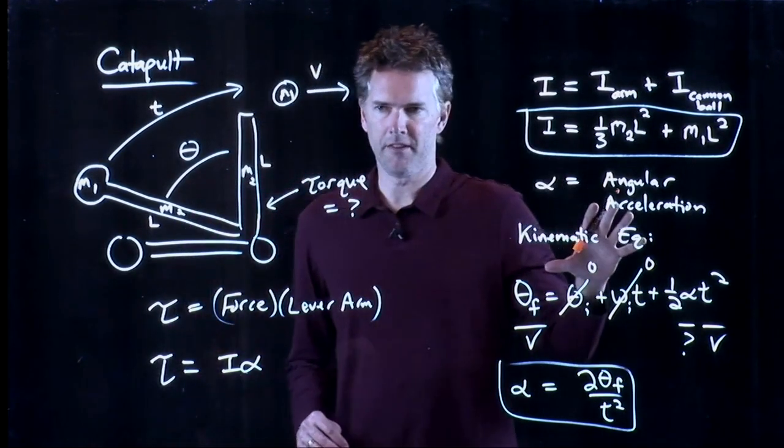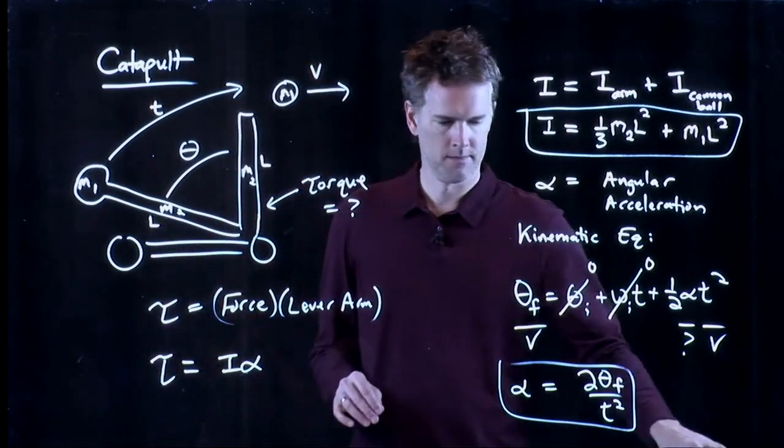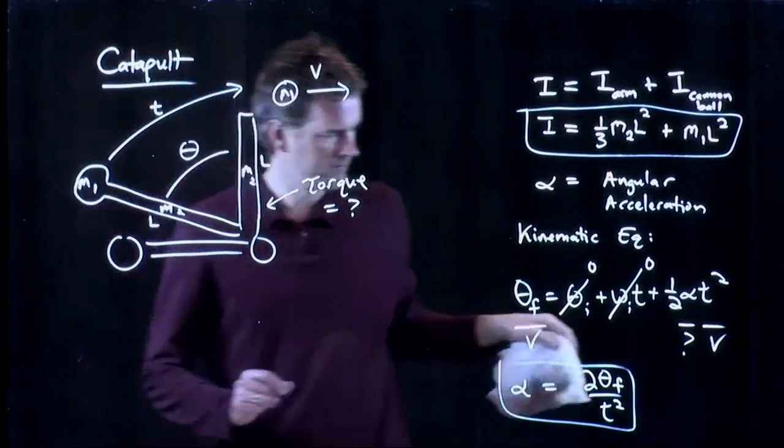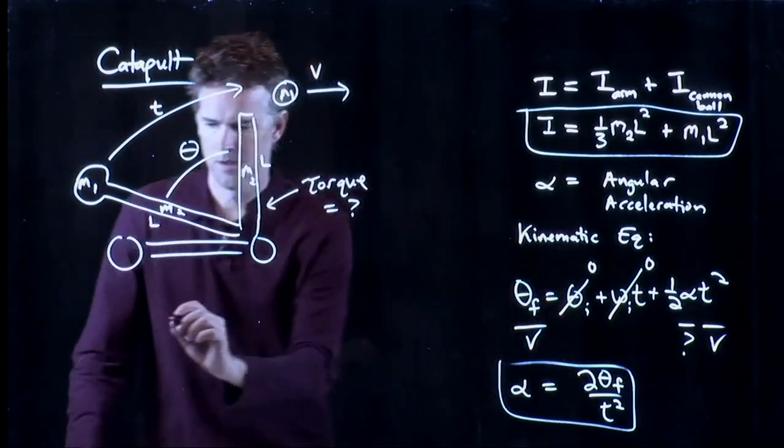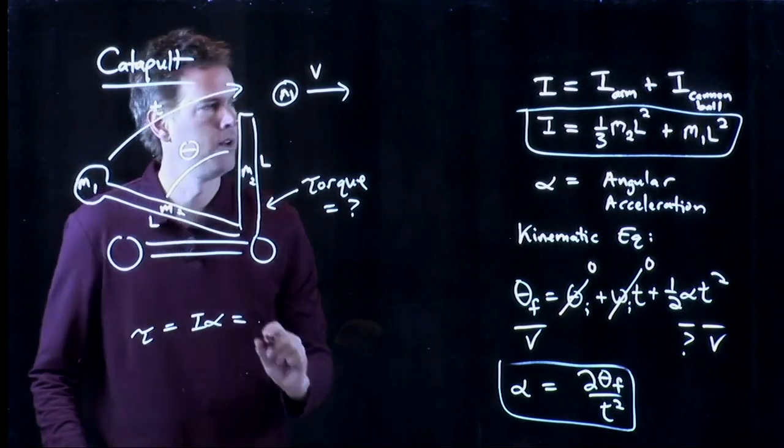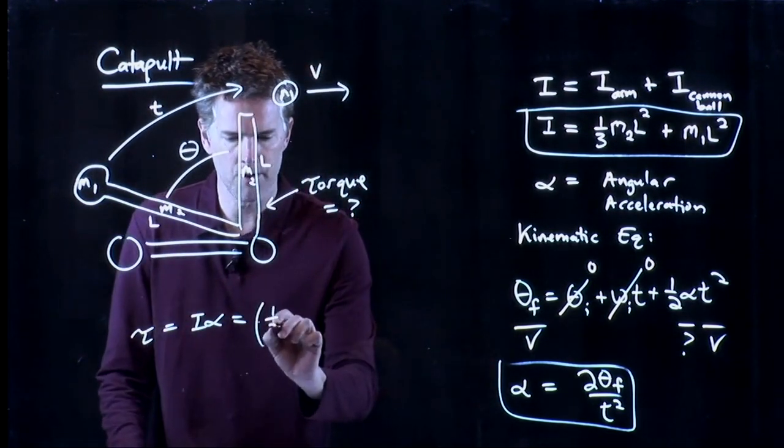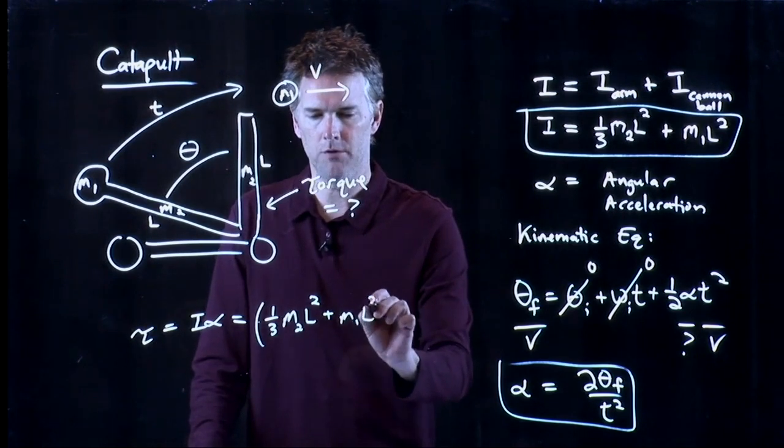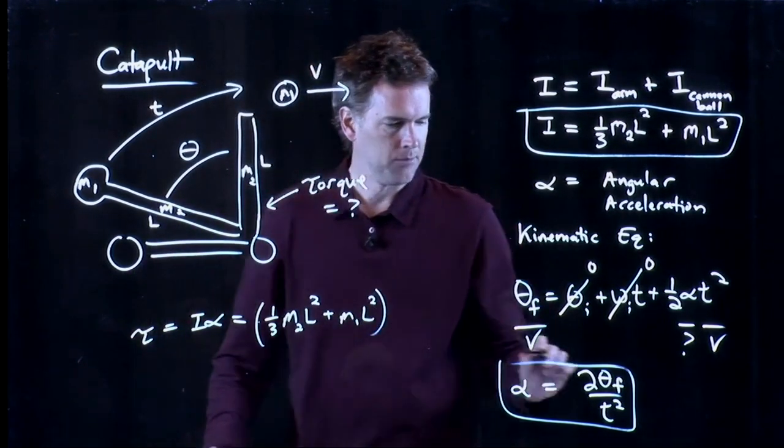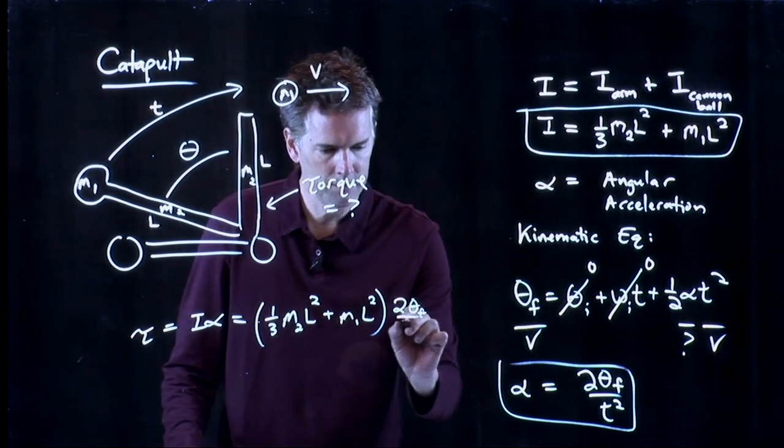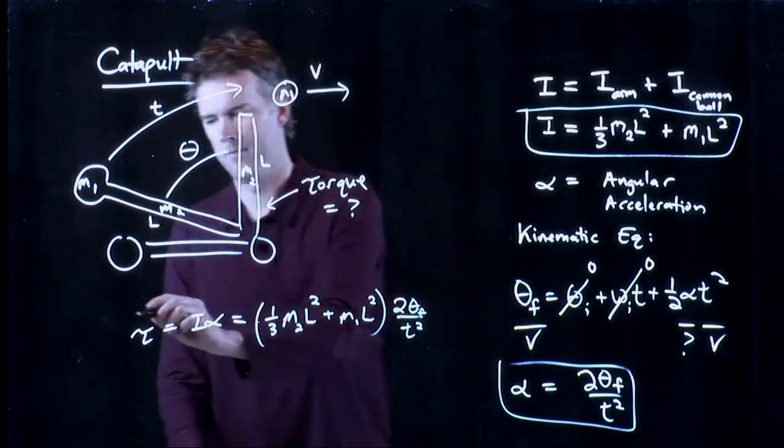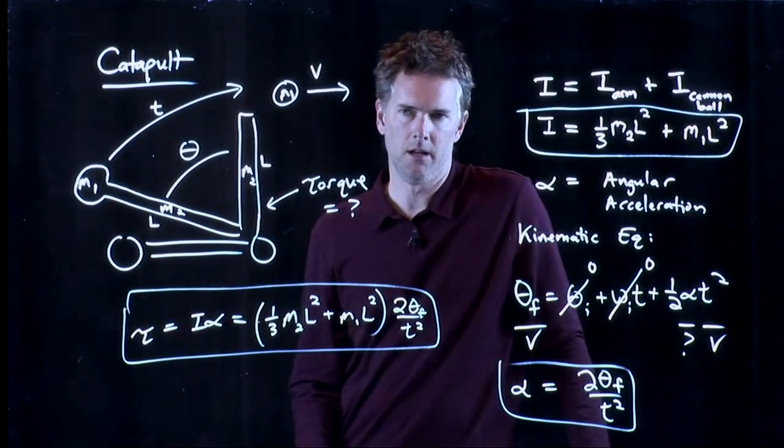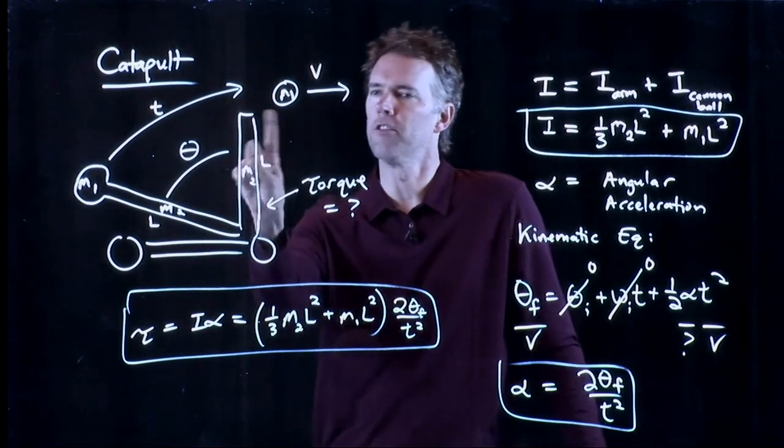And so now we can tie all this stuff together and calculate the torque. So torque is equal to I times alpha, which is one third M2 L squared plus M1 L squared, all of that times alpha, which we said was two theta F over T squared. And if you know all these numbers, then you can plug it in and calculate the straightening torque. What is the torque to cause this thing to rotate?